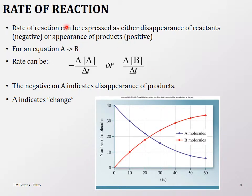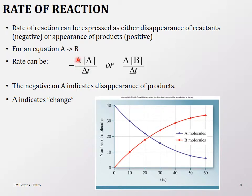So what is the rate of reaction? The rate of reaction can be measured as either the disappearance of the reactant or appearance of the product. If something is disappearing, it's going to be negative; if something is appearing, it's going to be positive. For a simple equation A going to B, A is the reactant and B is the product. The rate is designated as minus the change of concentration of A over time, where the delta signs indicate change.